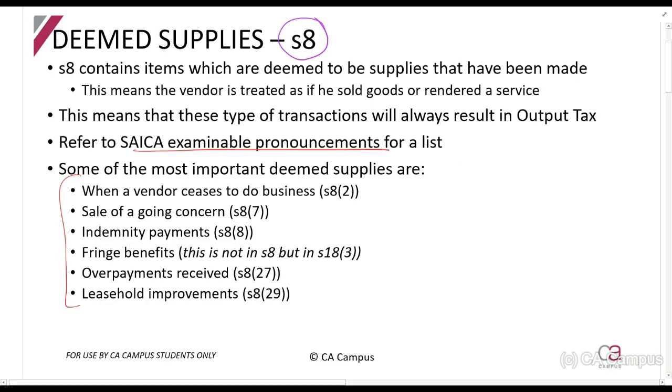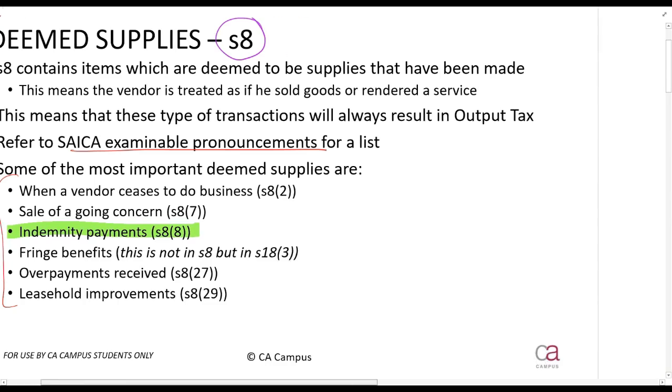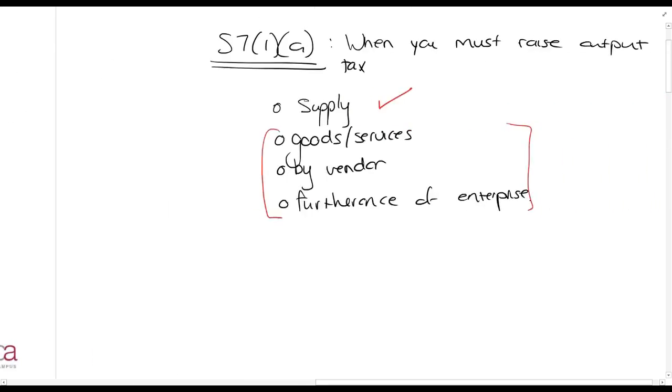For example, the first one you'll be looking at is an indemnity payment. When you receive insurance, so my building burns down and the insurance pays out money for me, I must then raise VAT on that. That's what section 8.8 tells us. If you think about it, my building burned down and I got money from the insurance company. Was there goods? Yes, the building. Am I a vendor? Yes. Is the building part of my enterprise? Yes. But did I supply it? Did I rent it out or supply or sell it to someone? No.